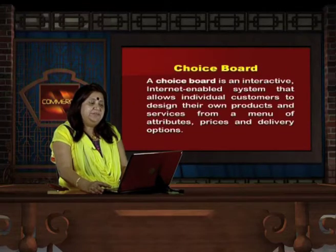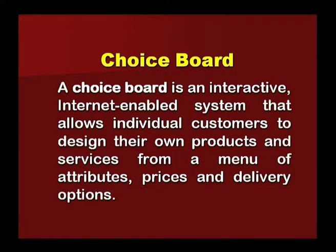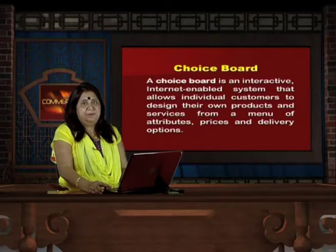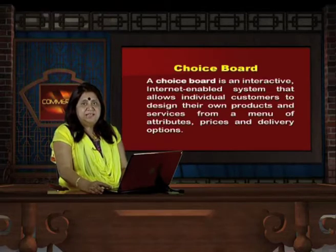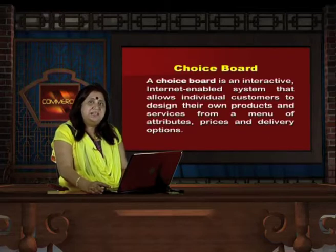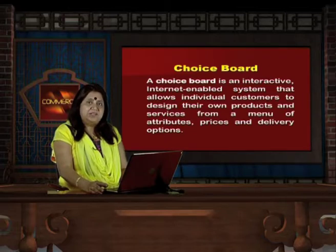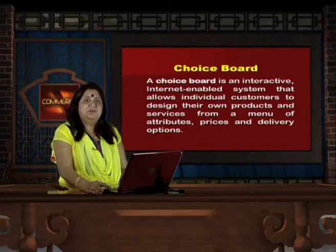A choice board is an interactive internet-enabled system that allows individual customers to design their own products and services from a menu of attributes, price and delivery options. You can add on or subtract features or variations you want for a service or product, and every feature has a different price. The menu is there — you can sort, select and make your bill. This is possible for ticketing, hotels, entertainment and products available in parts.